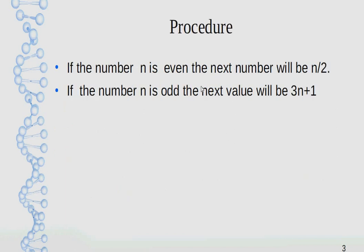Procedure: If the number n is even, the next number will be n/2. If the number n is odd, the next value will be 3n+1.